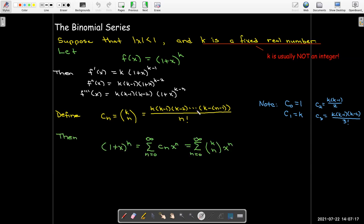So the Maclaurin series for this function would be summation n equals 0 to infinity k choose n is the coefficient times x to the power of n.